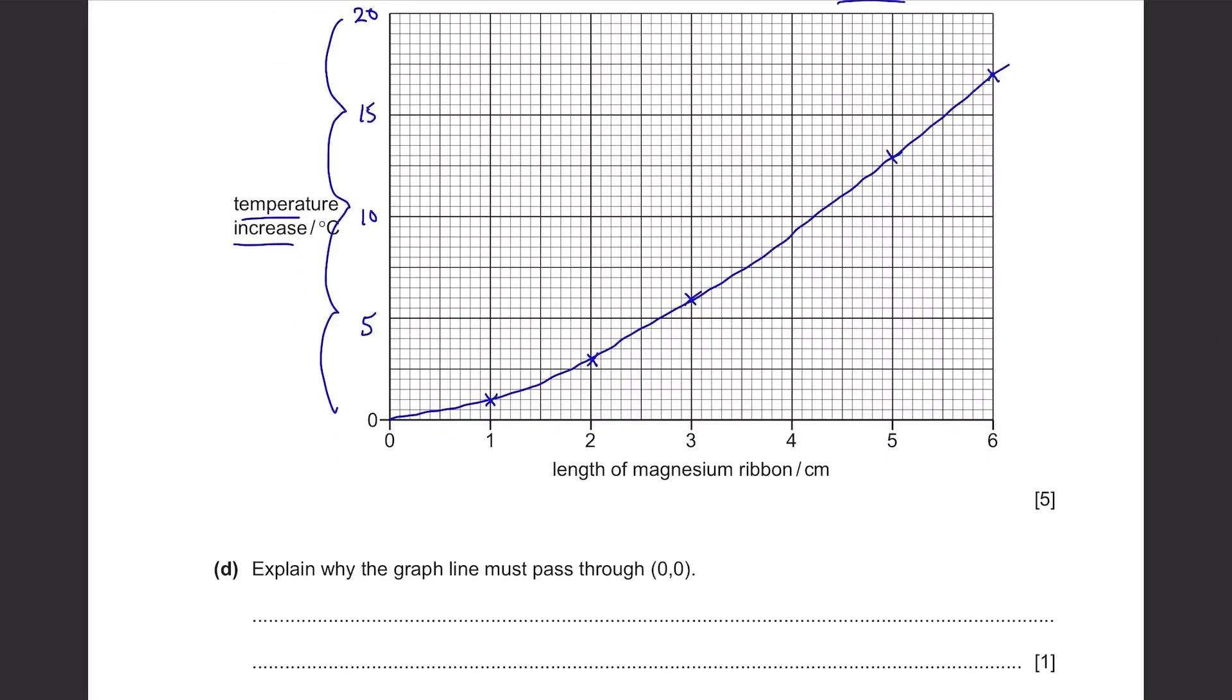Part D: Explain why the graph must pass through (0,0). This is because when the length of magnesium ribbon is 0, there should be also 0 temperature increase as there is no reaction when there is no magnesium. This is a bit of a common sense question.